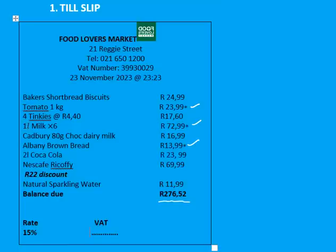The government does not charge VAT on necessity items — things people need to survive day to day — so no VAT is charged on these items. On the till slip, those three items are VAT-exempt. Before we can calculate VAT, we need to subtract them, so we take our balance due total and subtract the VAT-exempt items.